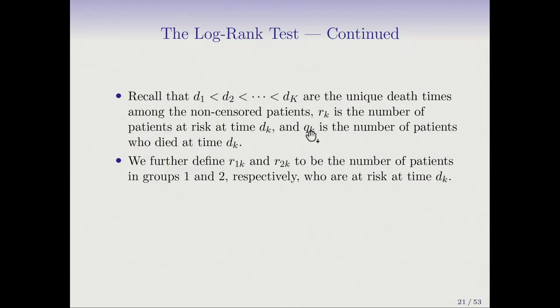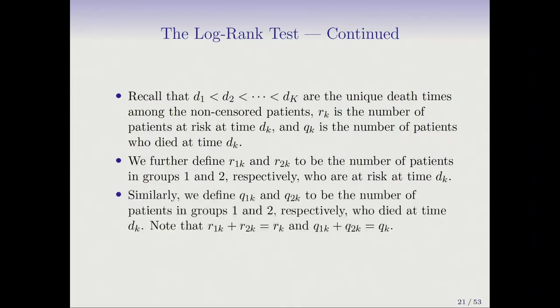So it is possible, some studies, especially if the time is sort of measured discreetly, maybe not by days, by months, you're going to have more than one patient dying at a given time. In the simplest case, QK will be one. But the log rank test can seamlessly handle the case where there's tied survival times.